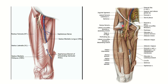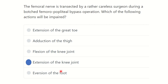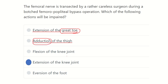The functions that will be lost are flexion of the hip joint and extension of the knee joint. So our answer is extension of the knee joint. Extension of the great toe is not correct because that is supplied by the deep peroneal nerve, not the femoral nerve. Adduction of the thigh is also incorrect, as the adductor group of muscles is supplied by the obturator nerve.